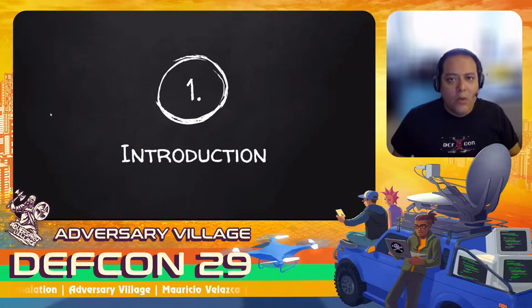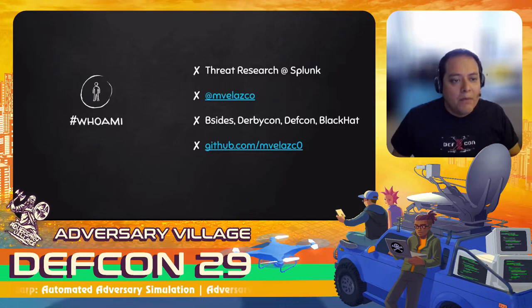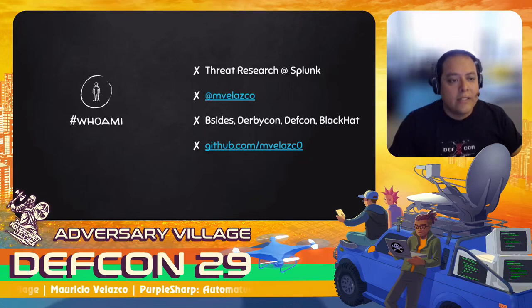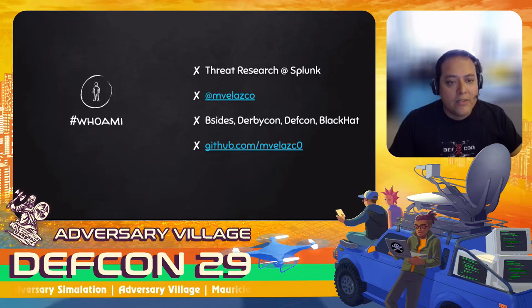Let me introduce myself - my name is Mauricio Velasco. I'm currently part of Splunk's Threat Research Team. Before that I was part of a blue team where I ran the threat management and detection team for a Fortune 500 organization for a few years, and before that I was a pen tester. I love meeting new people and chatting about infosec, so I'll leave you my Twitter account where I share my work and others' work.